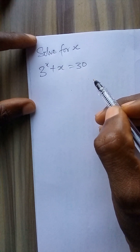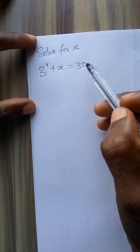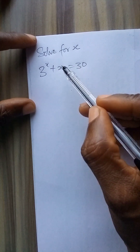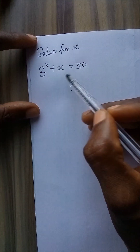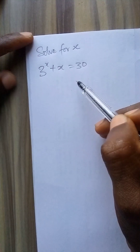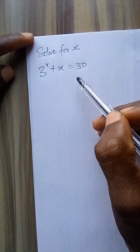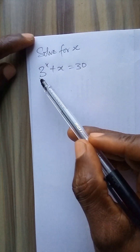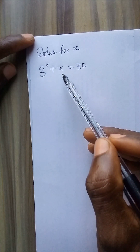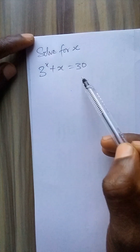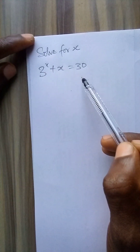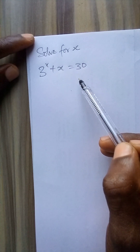Welcome to my channel. In this video, we are required to solve for x given that 3 to the power x plus x is equal to 30. Here we have a combination of an exponential function, a linear function, and a constant making an equation. How do we go about solving for x?